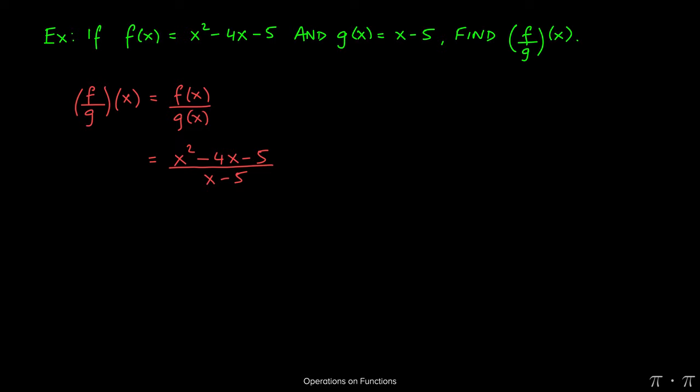Now here we can see that we can actually factor the numerator. Using the AC method, we get x minus 5 and x plus 1 as factors.